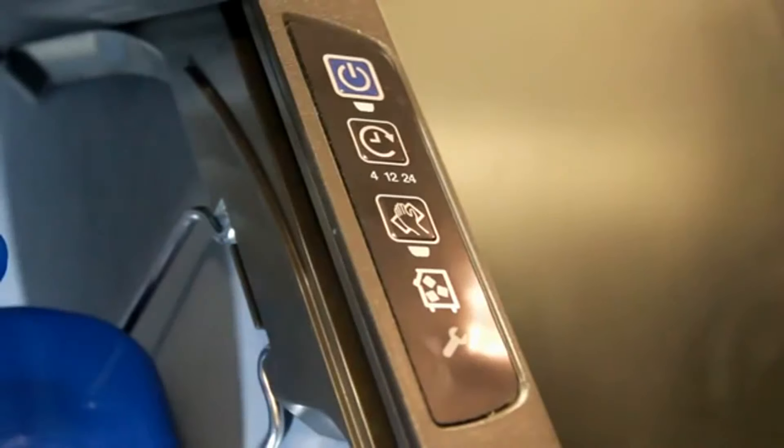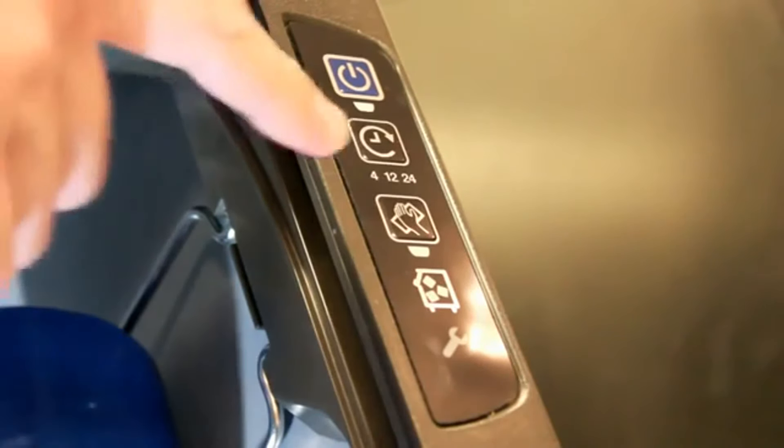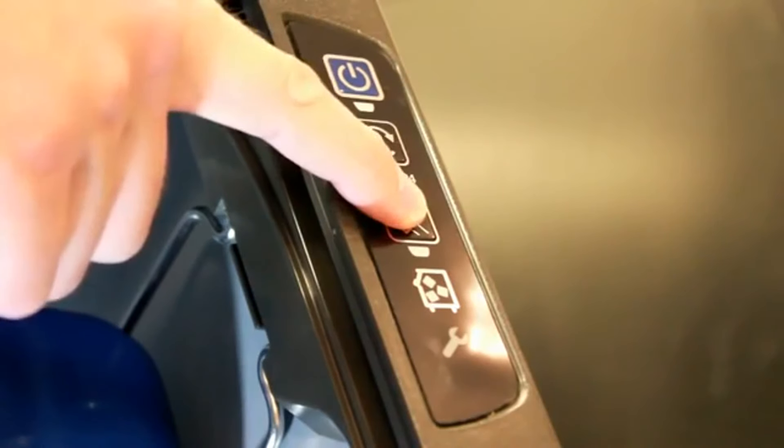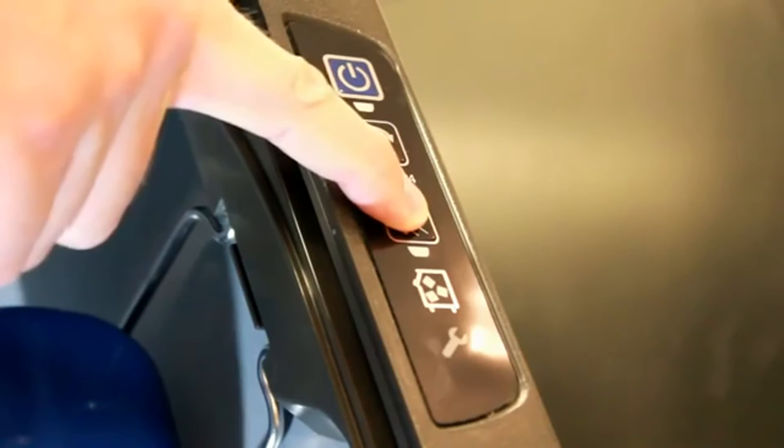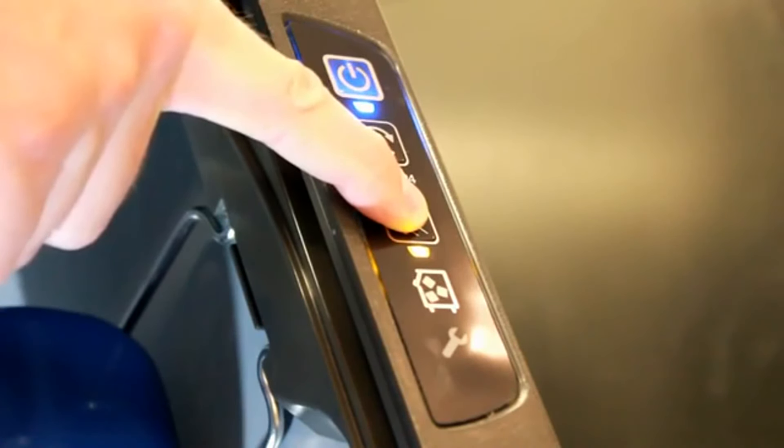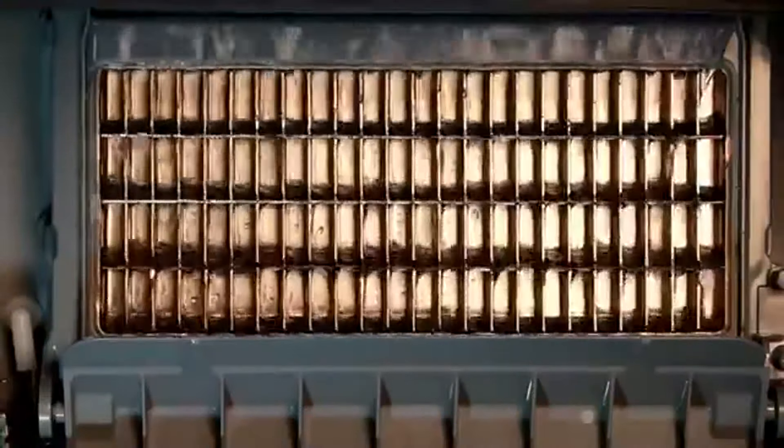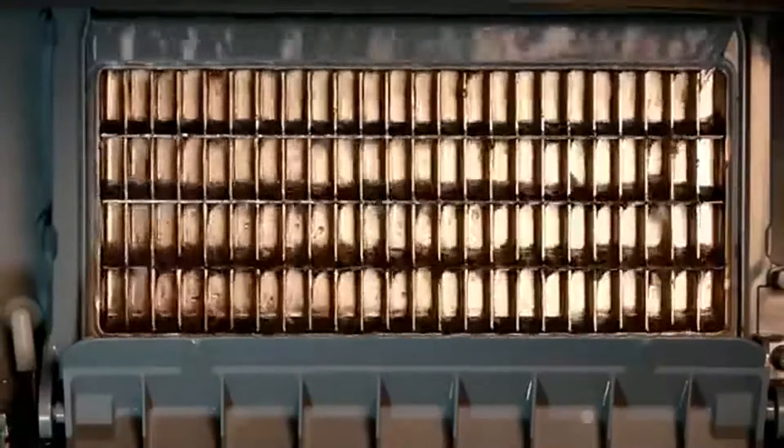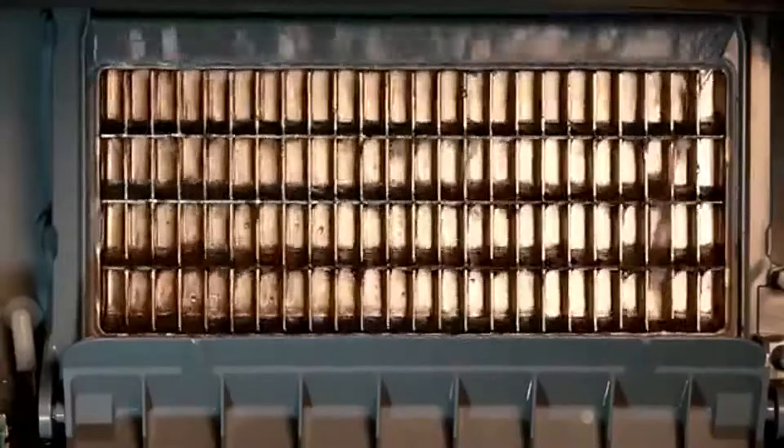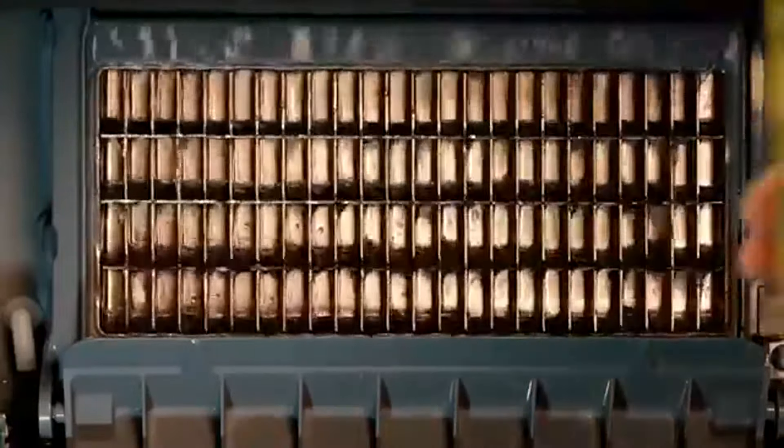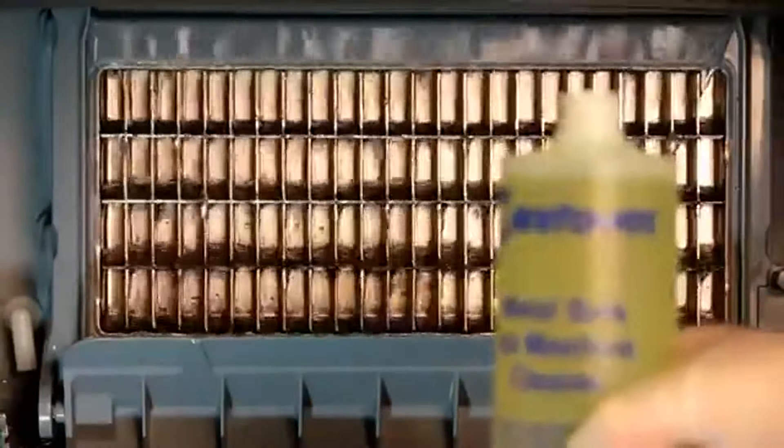Step number three is to initiate the cleaning cycle. You'll need to hold it down for about three seconds in order for it to activate. Once the light is on, you know you're in the cleaning cycle. It'll take a moment for the water trough to fill. Once full, and the water begins to cascade down the evaporator, add the appropriate amount of Manitowoc Cleaner.